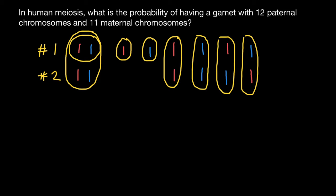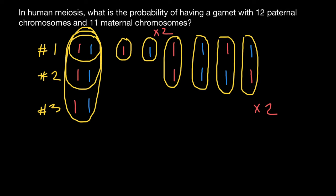With three pairs of chromosomes, each additional pair multiplies our combinations by two. With three pairs — six total chromosomes — that means eight different gamete combinations. We can easily predict the number of different gametes from the number of chromosome pairs: with four pairs we just multiply by two again, giving 16 different combinations.